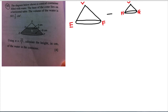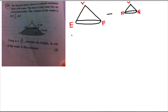So before you find this height, you need to understand how to get the volume of the water inside this conical container. What I know is I can use the big cone minus the small cone to get the remainder volume. I've pre-drawn the cones here — VEF is the big cone and VHG is the small cone. The formula for the volume of a cone is 1/3 × π × r² × h.